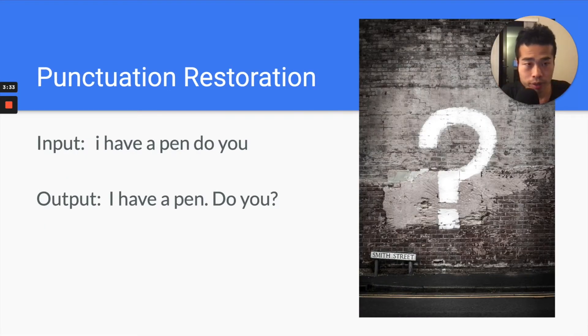So what is punctuation restoration? It's quite simple. The input of the model is a raw text, which is lowercase text without any punctuation marks. Then the model needs to insert the correct punctuation marks. When you insert the punctuation marks, basically you do a sentence tokenization, you know where's the boundary of sentence. So the model will also uppercase the first character, first letter of a sentence.